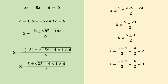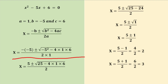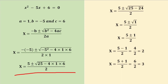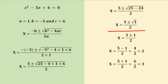Now substituting the values of a, b, and c: x = −(−5) ± √((−5)² − 4·1·6) / (2·1). So x = 5 ± √(25 − 24) / 2. This simplifies to x = 5 ± √1 / 2, and since √1 = 1, we have x = (5 ± 1) / 2.